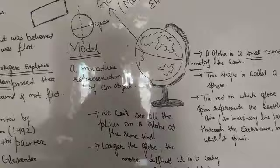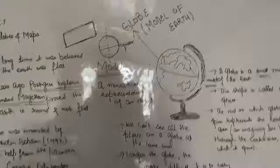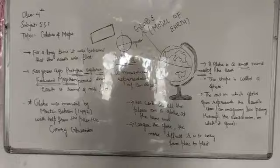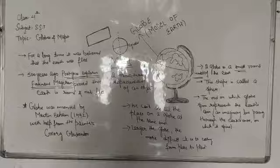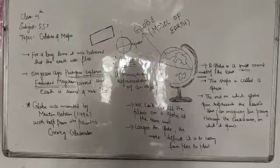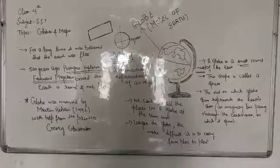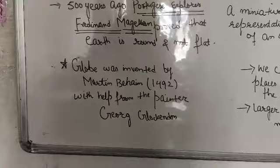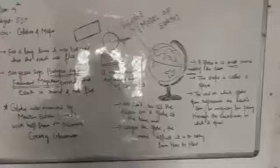So dear students, in today's lecture, what we studied is that the globe is a model of earth. A model is when we show big things in small form. Globe is a model of earth that provides us complete information about earth's places, oceans, and continents. The person who first invented the globe was Martin Behaim in 1492 with the help of the painter George Glockendon. I hope today's lecture is clear to you. I shall see you in next lecture. Have a great day.